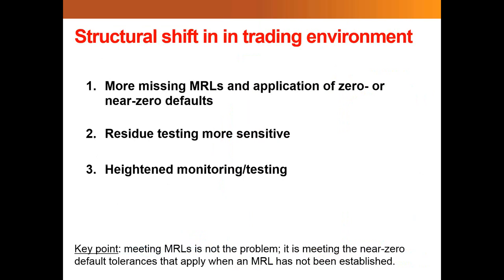The first trend is that we see more and more missing MRLs, which comes with the application of zero or near-zero default MRLs, because more and more countries are moving away from the global standard of MRLs — which is Codex — toward their own custom in-country national MRL lists. The more we see of those, the more potential there is for misaligned lists and for those zero or near-zero defaults. The second thing is that residue testing is more sensitive. It's now possible — the shorthand might be — to find anything in anything.